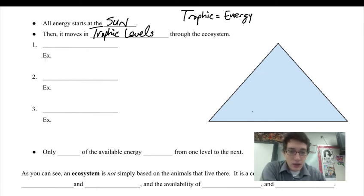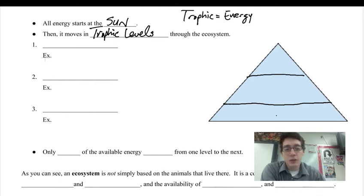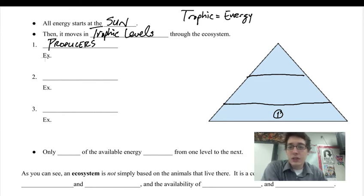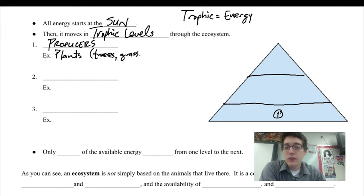And so we're going to start down here. So let's draw, split this pyramid into thirds. So we're going to call this level one, and this is the producers. And the producers, these are anything plants. These are all plants. So trees, grass, bushes, whatever.